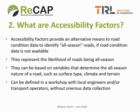What are accessibility factors? Accessibility factors provide an alternative means to estimate the all-season status of road networks if road condition data is not available. They basically represent the likelihood of a group or network of roads being all-season, and so are closely aligned with the original 2006 study's allowance for roads being temporarily unavailable during inclement weather. Accessibility factors can be based on variables such as surface type, climate, and terrain, and can be defined in a workshop with local engineers and transport operators without the need for onerous extra data collection.